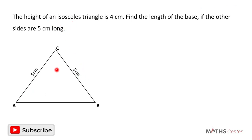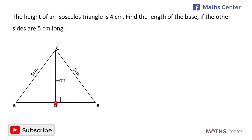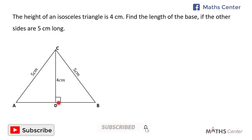The question says that the height of the isosceles triangle is 4 cm. This means that if we draw a perpendicular line from point C to meet line AB, the length of this line will be 4 cm. Let's call this point D. In an isosceles triangle, when we draw a perpendicular line from point C to meet line AB, it will divide AB into two equal parts, so the length of AD will be the same as the length of BD.